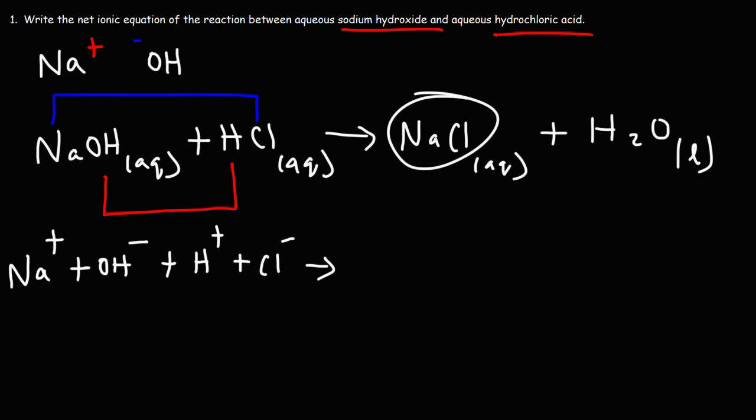Now, for NaCl on the right, we can write that as Na+ and Cl-. Now, water is not in the aqueous phase. It's in the liquid phase, so we're just going to leave it the way it is. So that is the total ionic equation in this example. And just don't forget to write aqueous for all the ions.